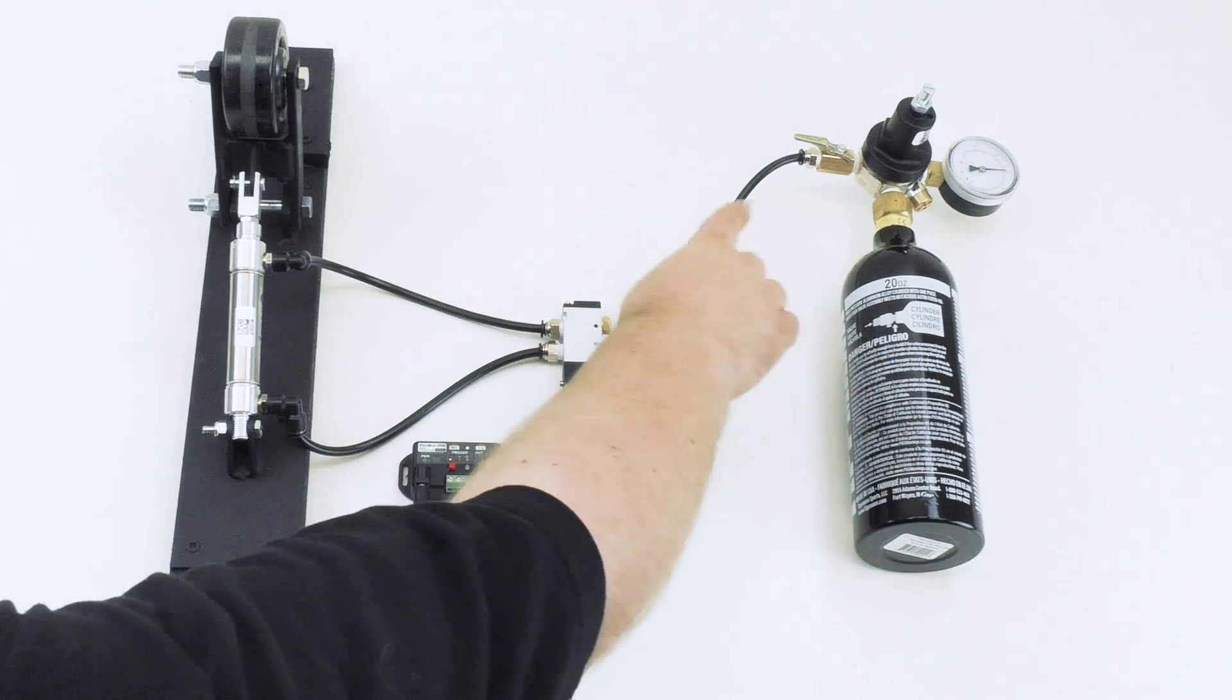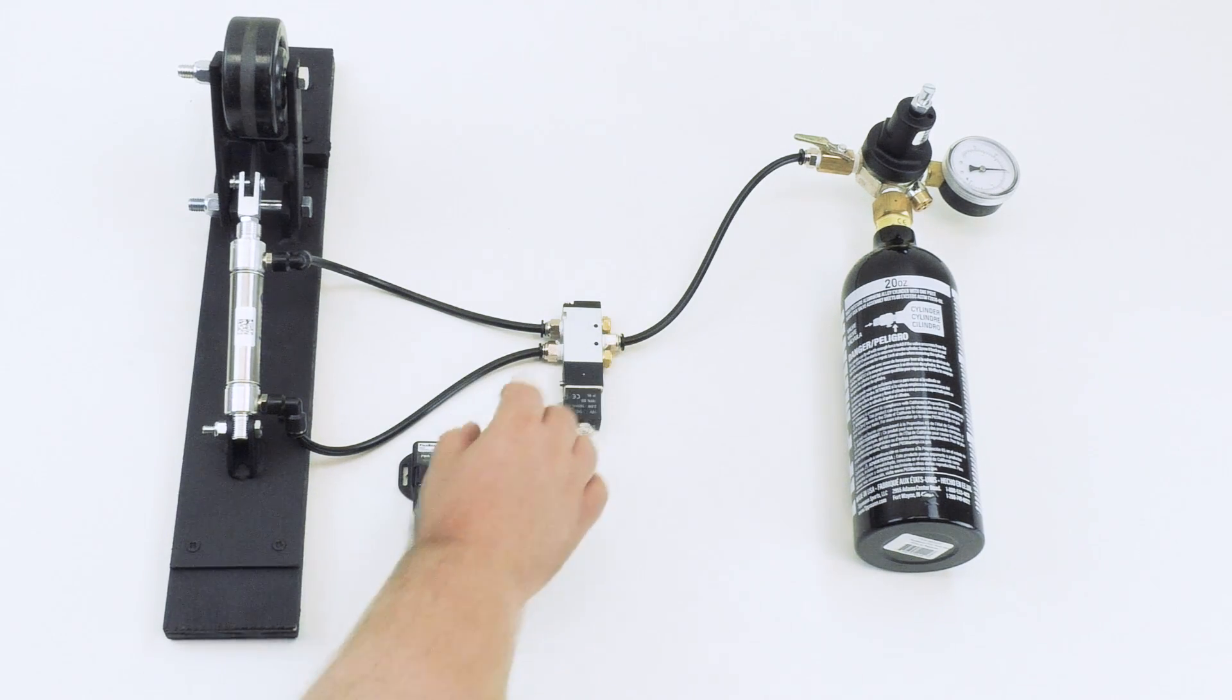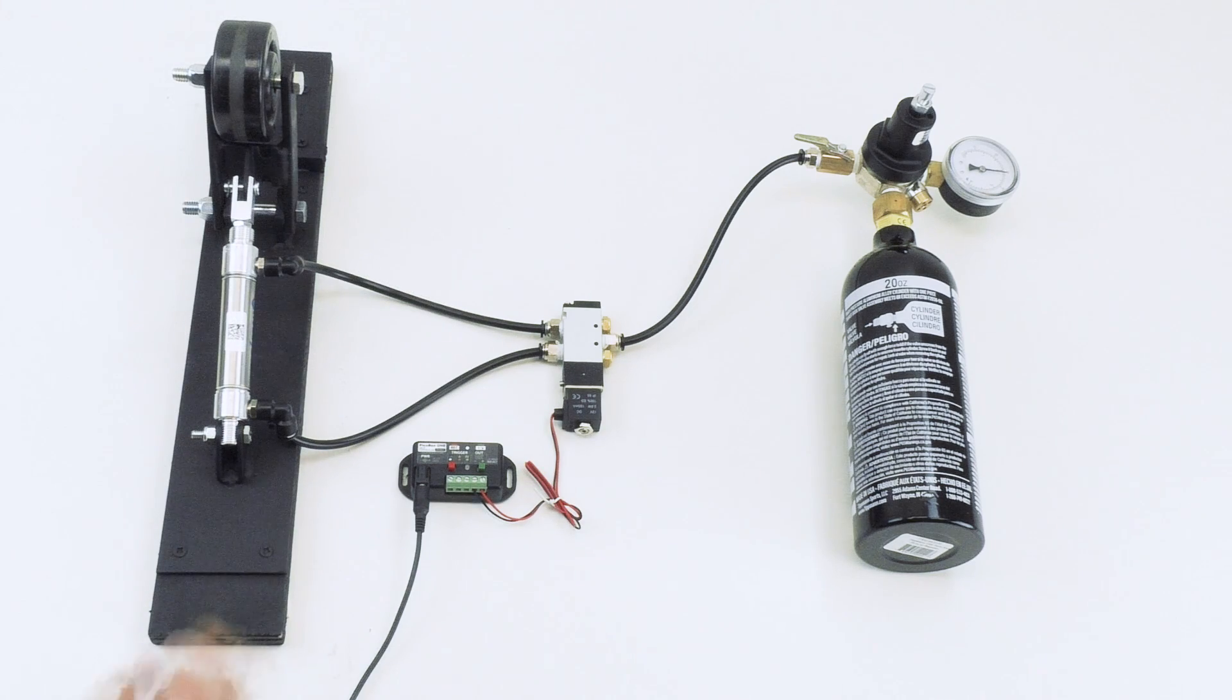Again the CO2 is going to flow into the solenoid valve. We're going to use the peekaboo 1 to turn the solenoid valve on and off, which will make the cylinder actuate in and out. To record a sequence, I'm just going to tap record, tap out my sequence on the green button here, and then tap record again to save.